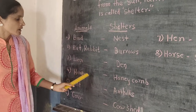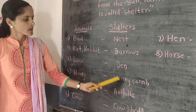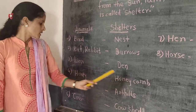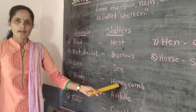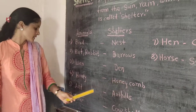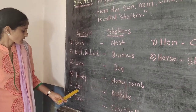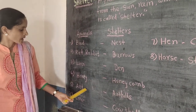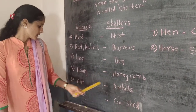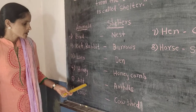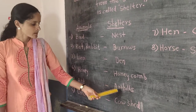Honey bee — shelter is honeycomb. In Marathi, madmashi cha orat rati. Ant — shelter is anthill. In Marathi, moongi, warwa rati.